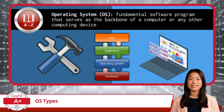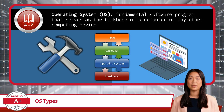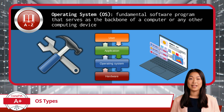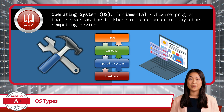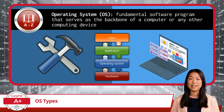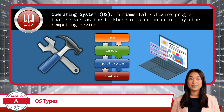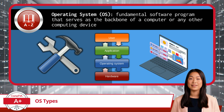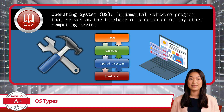An operating system, or OS for short, is the fundamental software program that serves as the backbone of a computer or any other computing device. It has the primary job of being the intermediary between the hardware components of the computer and the applications or software running on it. More simply put, an operating system is like the boss of a computer, coordinating all its tasks and making sure everything runs smoothly.